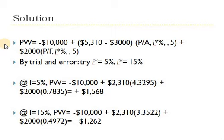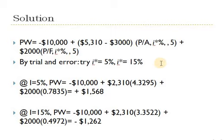Starting with the IRR method, we always set present worth equal to zero and identify all inflows and outflows. Here I have an initial investment, an annuity, and a future value. Unlike previous exercises with only one factor, here I have both the (P/A, I, N) factor and the (P/F, I, N) factor in the same equation. With two factors in the equation, using the algebraic equation or interest tables becomes complicated, so it's easier to use the method of trial and error.